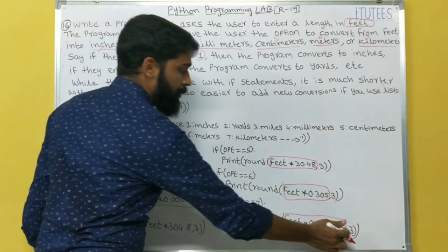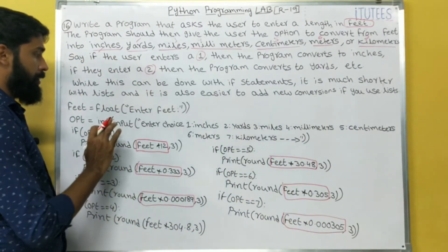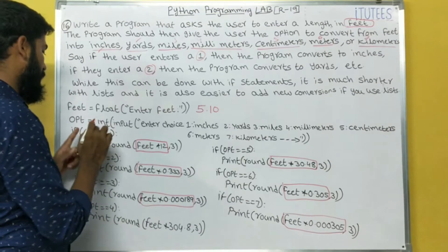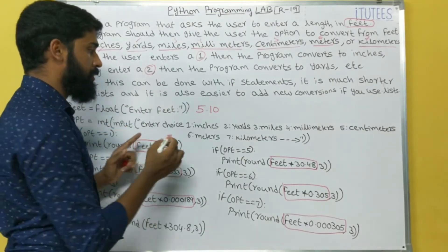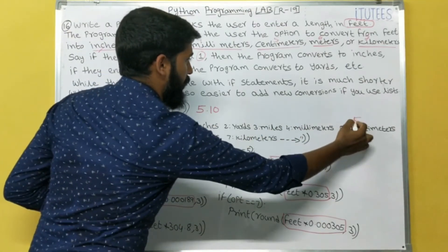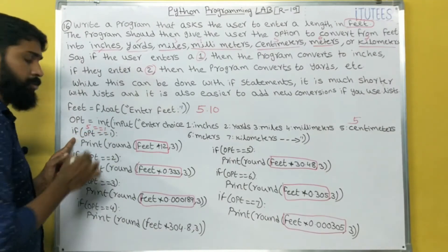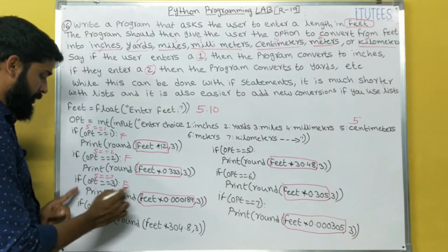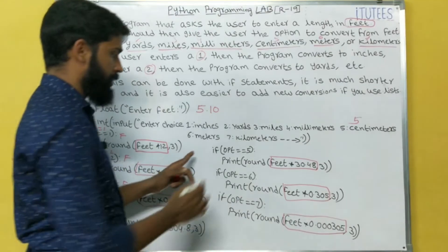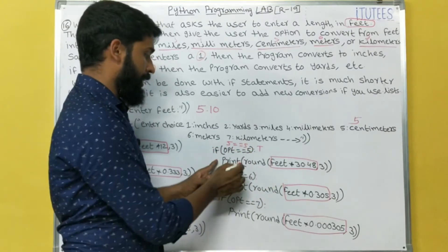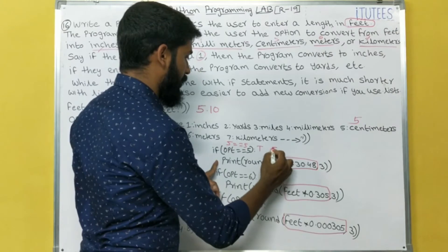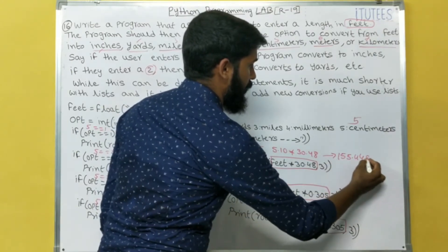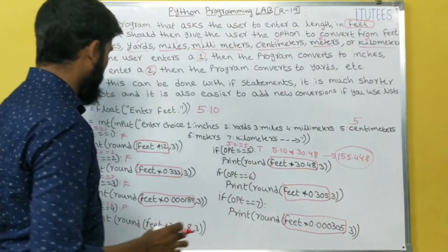The round function is used to round the decimal up to 3 decimal places. For example, feet equals 5.10. It then asks for the choice — I entered 5 for centimeters. The program checks: 5 == 1? False. 5 == 2? False. 5 == 3? False. 5 == 4? False. 5 == 5? True. So it enters that block and calculates 5.10 into 30.48, which gives 155.448. This is the output when rounded to 3 decimal places.